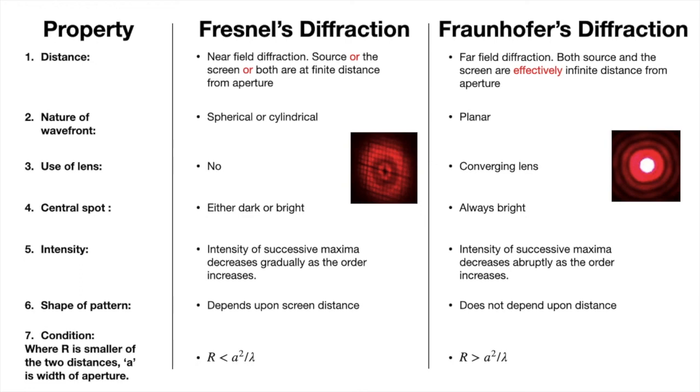The relationship between R and A squared by lambda, where A is the width of the aperture, or in the case of an obstacle it can be the width of the obstacle too. Lambda is the wavelength of monochromatic light, and R is the smaller of the two distances. Which two distances? In each case, the distance between source and the obstacle, and obstacle and the screen. Whichever is smaller, that you treat as R.